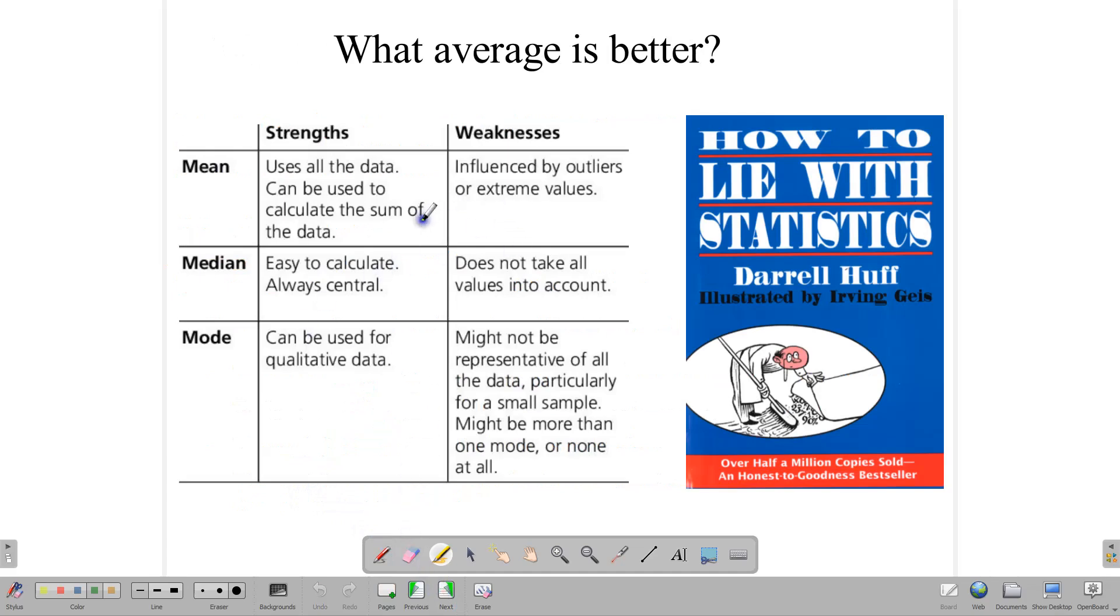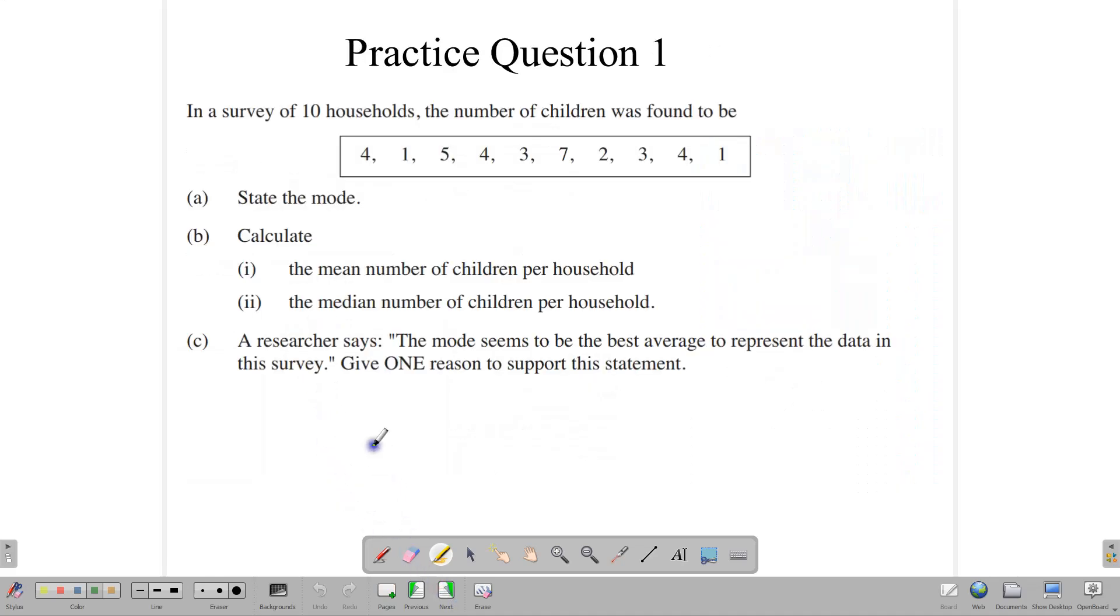So which average is better? Depending on what you're doing. Each has advantages. Each has disadvantages. And as we go through the questions, you'll get an idea of what we mean by which average is better. Generally depends on the situation that you're working with. All right. So let's look at some questions now and get an idea of what we mean when we try to work with the averages. So first up, we have a survey of 10 households. The number of children was found to be 4, 1, 5, and going through these. And the first thing we want to do is to put these numbers in order.